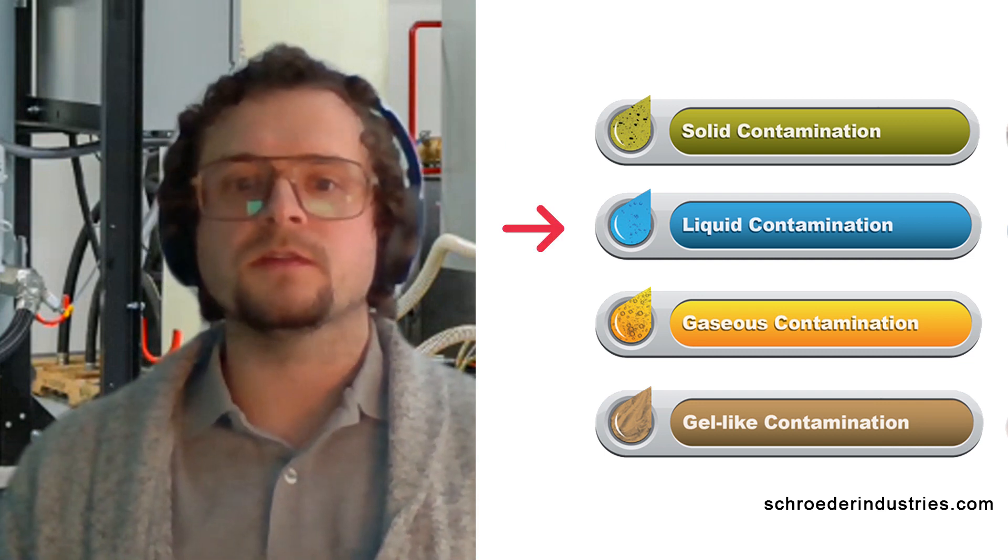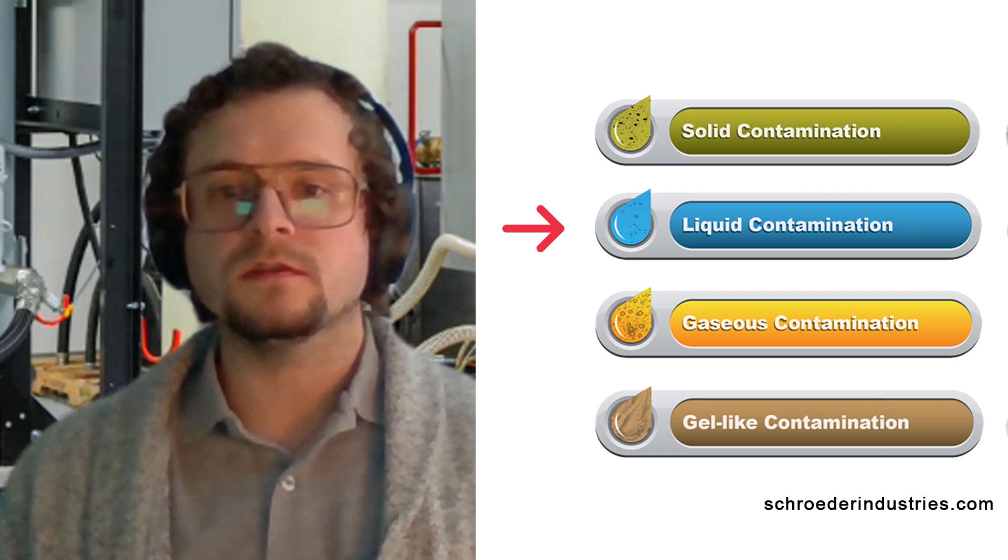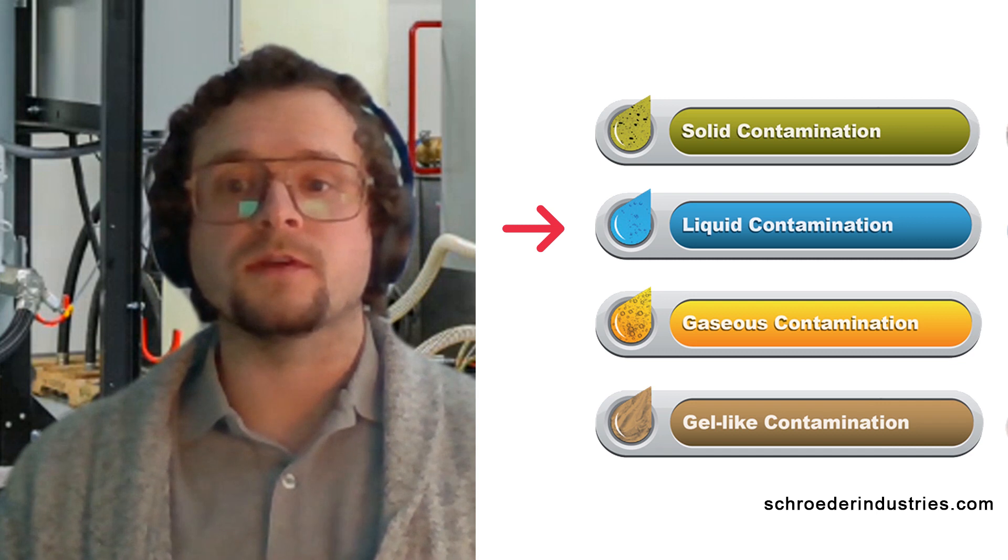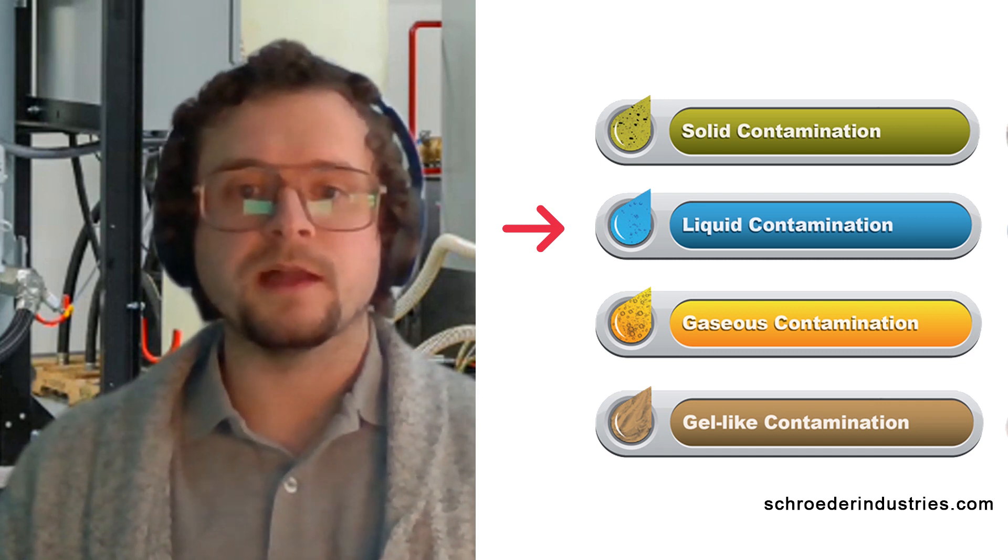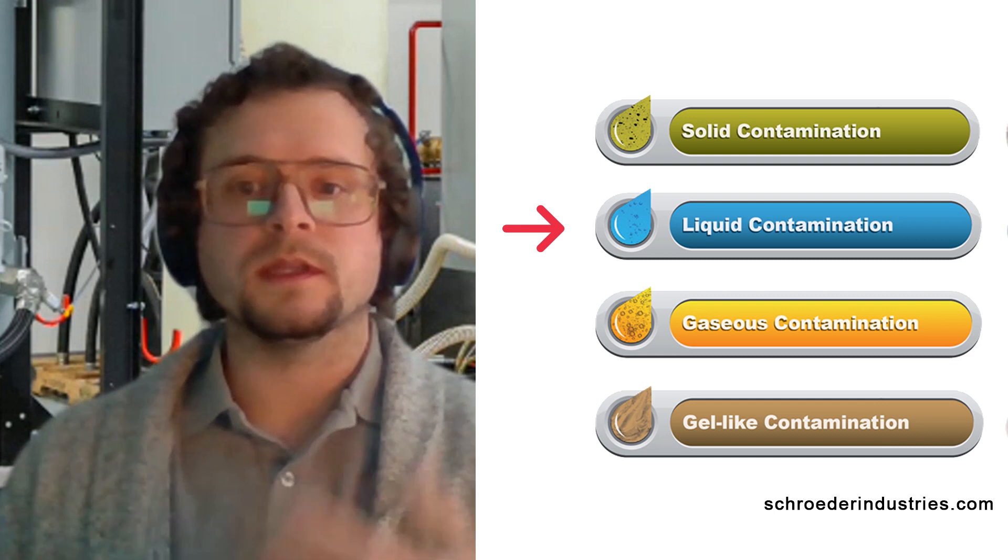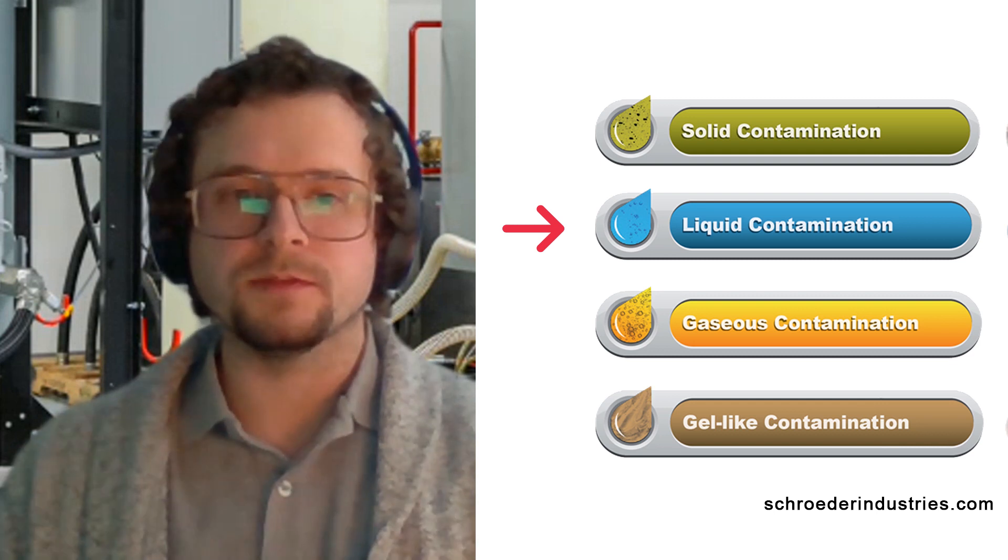Water contamination, on the other hand, can accelerate the fluid aging process and can further contribute to the generation of varnish or cause corrosive pitting to metallic components, and therefore internally generate solid metallic particle contamination.